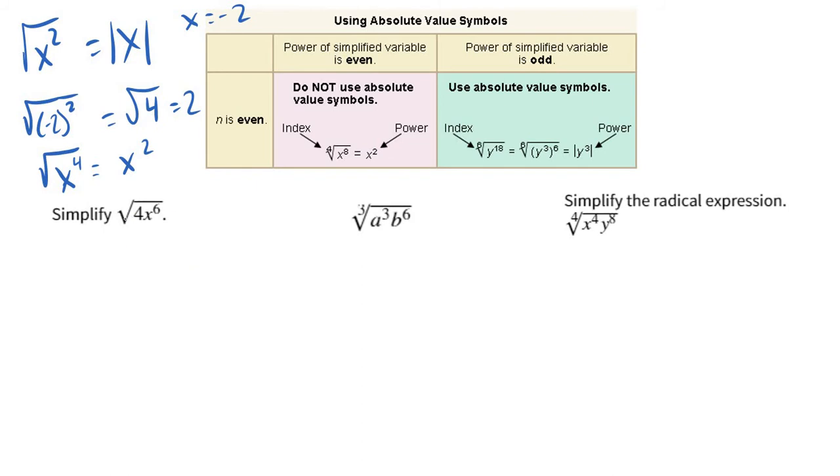So let's simplify this. What's the square root of 4x to the sixth? Well, square root of 4 is 2, right? Pretty straightforward. x to the sixth. Well, square root of x to the sixth is going to be x cubed. x cubed times x cubed would be x to the sixth. Notice it's odd, though, and so I need that absolute value there. And so that's the way I'm going to report my answer.